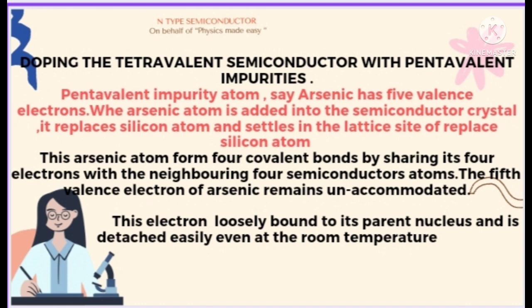This arsenic atom forms four covalent bonds by sharing its four electrons with the neighboring four semiconductor atoms. But the fifth valence electron of arsenic remains unaccommodated — it is loosely bound to its parent nucleus and is detached easily even at room temperature.